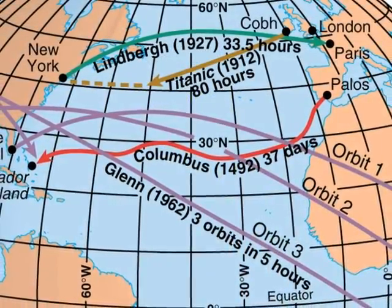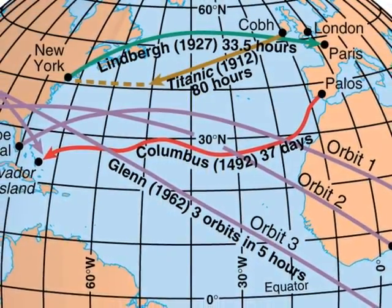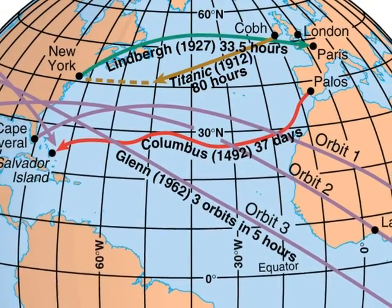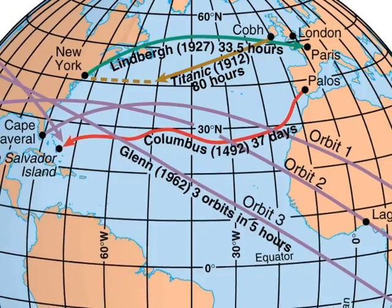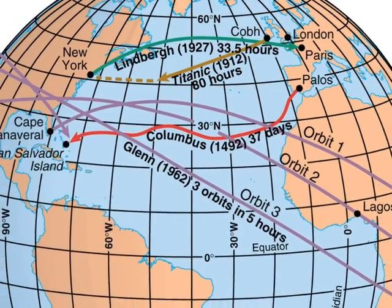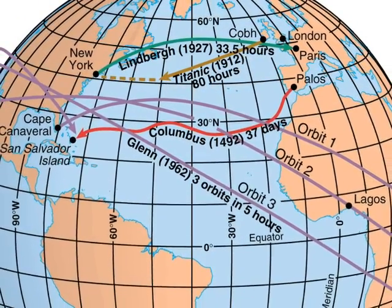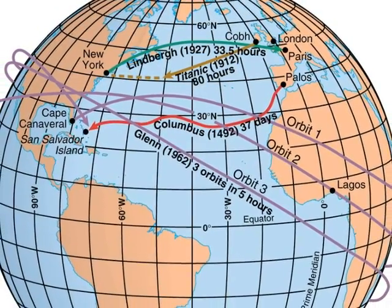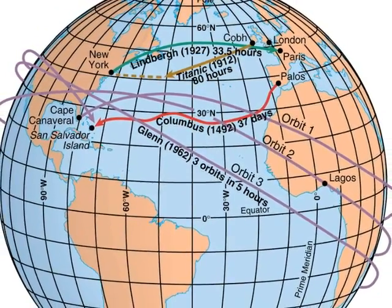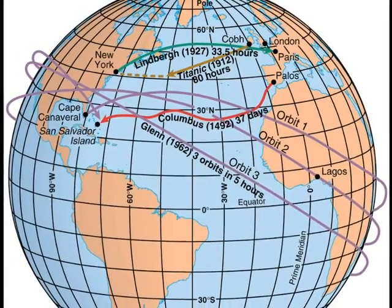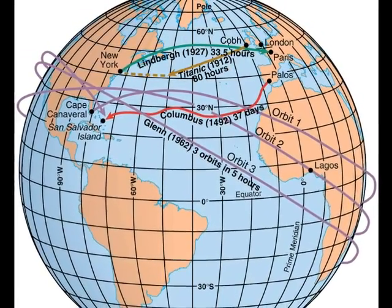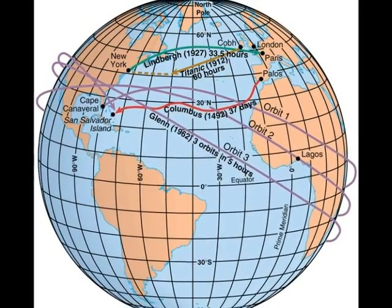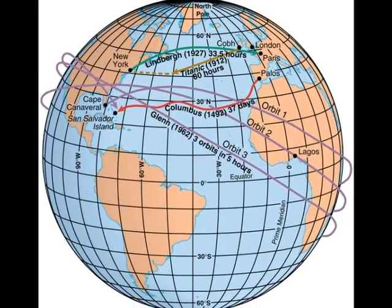In 1492, Christopher Columbus took 37 days — that's 900 hours — to sail across the Atlantic Ocean from the Canary Islands to San Salvador. Charles Lindbergh was the first person to fly non-stop across the Atlantic, taking 33 hours to go from New York to Paris. In 1962, John Glenn was the first American to orbit in space, crossing above the Atlantic in about a quarter hour and circling the globe three times in five hours. This illustrates time-space compression.